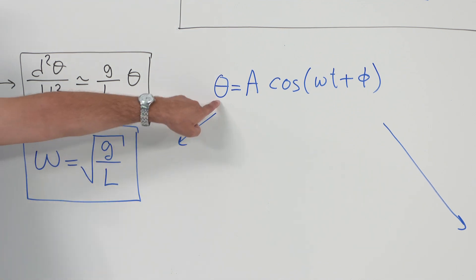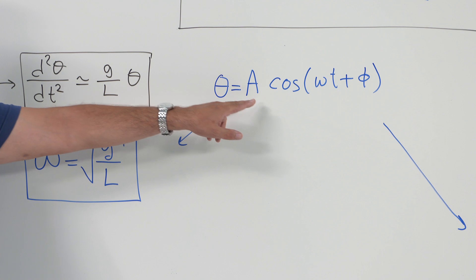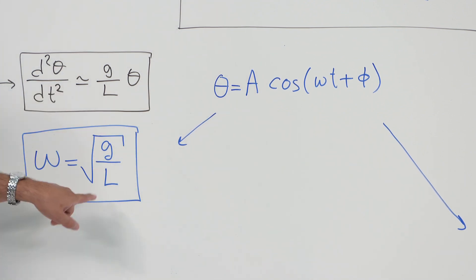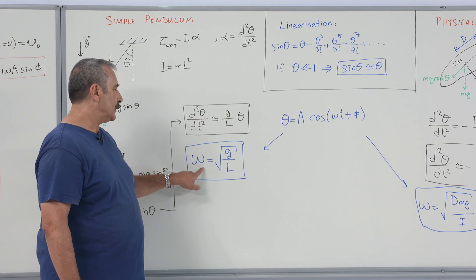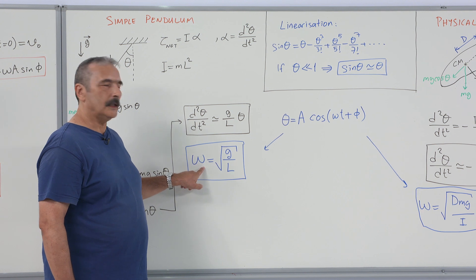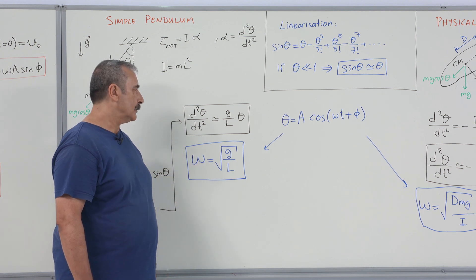Here, of course, the theta is the function of time. So taking the derivative and inserting into the equations, we obtain angular frequency for the simple pendulum, root squared g over L.